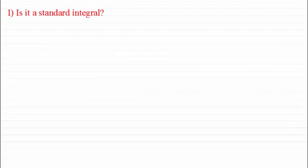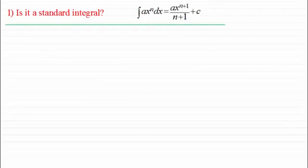And by that, does it contain terms of the form ax to the power n, a being a constant. This is the type where we add 1 to the power and divide by the new power. And remember, you've got your constant c of integration.